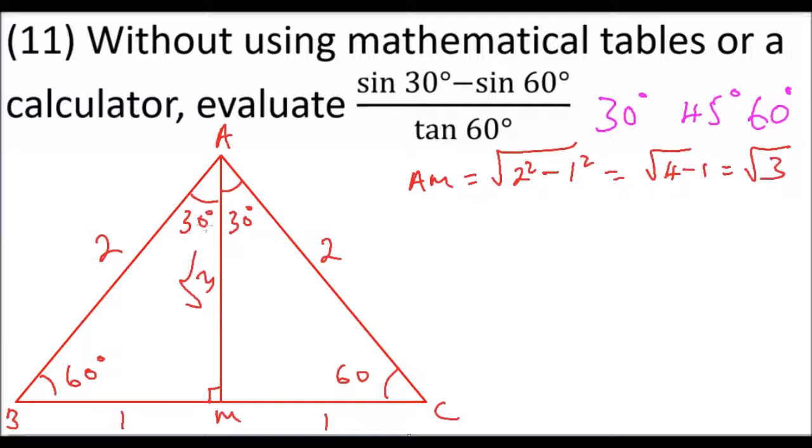Since we are told to evaluate this expression, sin 30° is the opposite side divided by the hypotenuse. So this equals the opposite side, which is 1, divided by 2.